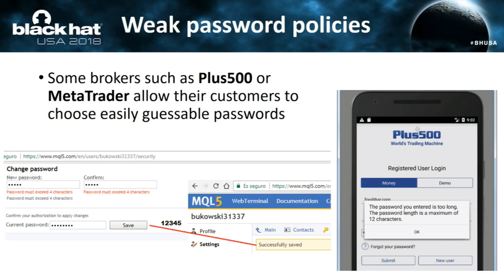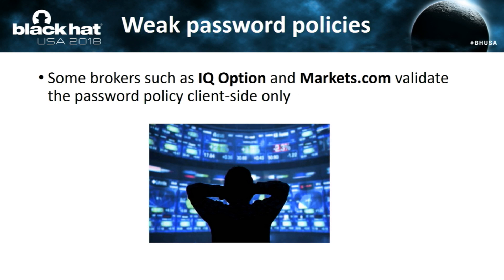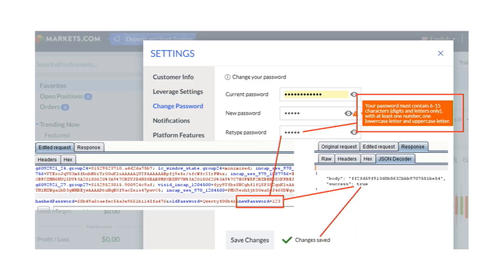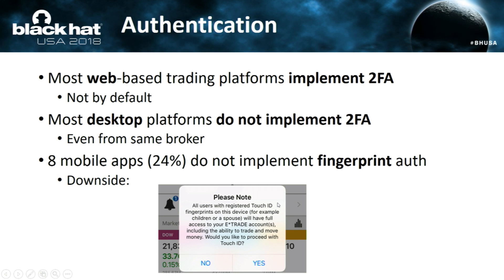Regarding passwords: some brokers allow you to choose '1, 2, 3, 4' as a password. Others tell you the password you entered is too long — asking you to choose a weaker one — with a maximum of 12 characters. IQ Option and markets.com implement a password policy, but only client-side in JavaScript — server-side it is not implemented. The password '123' was accepted by the server.